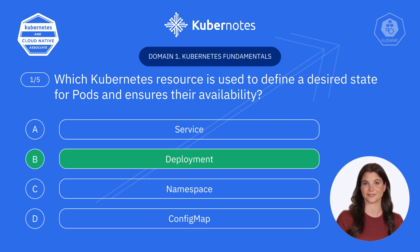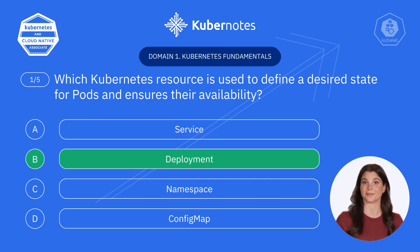That's right, it's B. Deployment. Deployments are the managers of Kubernetes, ensuring your pods are running as you expect. If one pod crashes, the deployment spins up another to take its place.